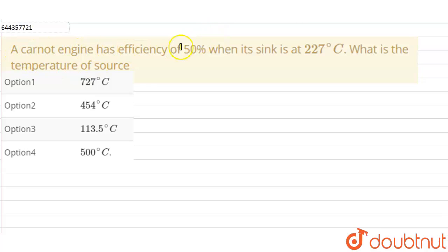Hello everyone, so our question is: A Carnot engine has efficiency of 50 percent when its sink is at 227 degrees Celsius. What is the temperature of source? So we have to find the temperature of the source when the Carnot engine working with a sink temperature of